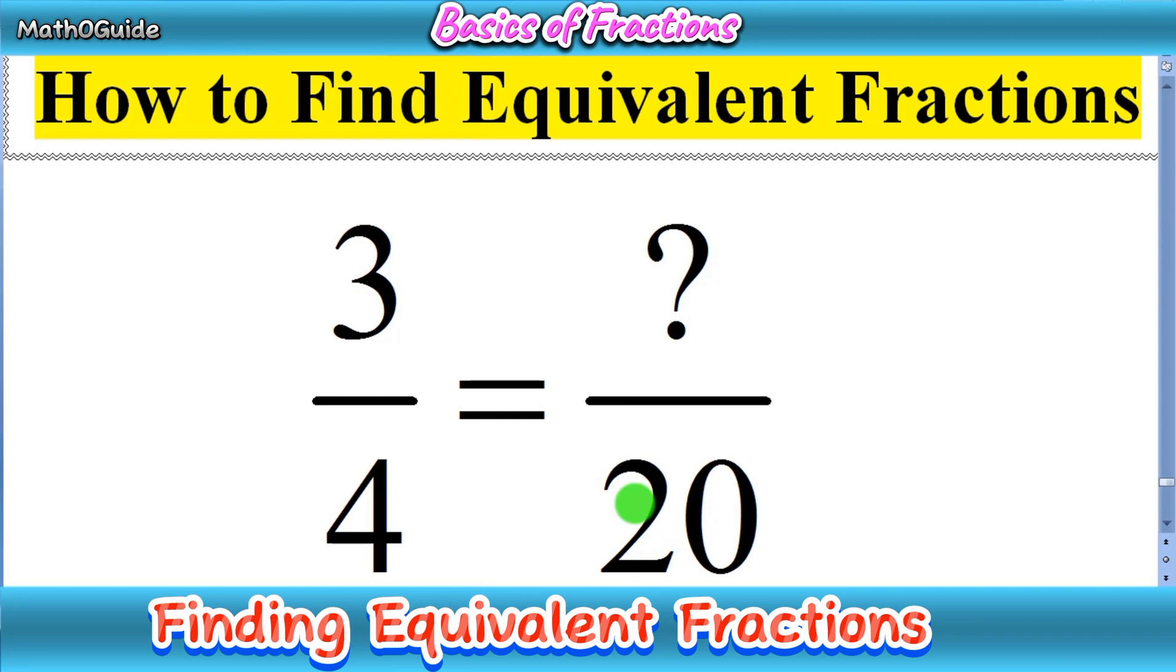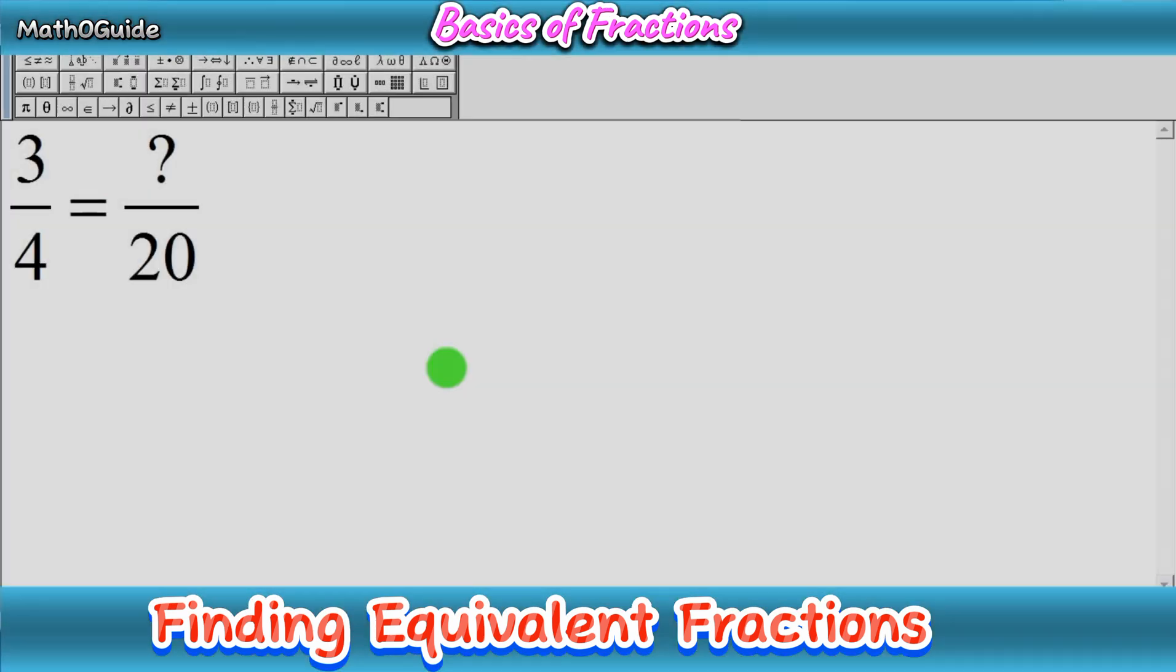Simply we have to rewrite the given expression. We have one fraction on left hand side, 3 over 4, and after equal sign we have a fraction but we have a missing numerator. So we have to find this numerator. First of all you have to identify the smaller fraction.